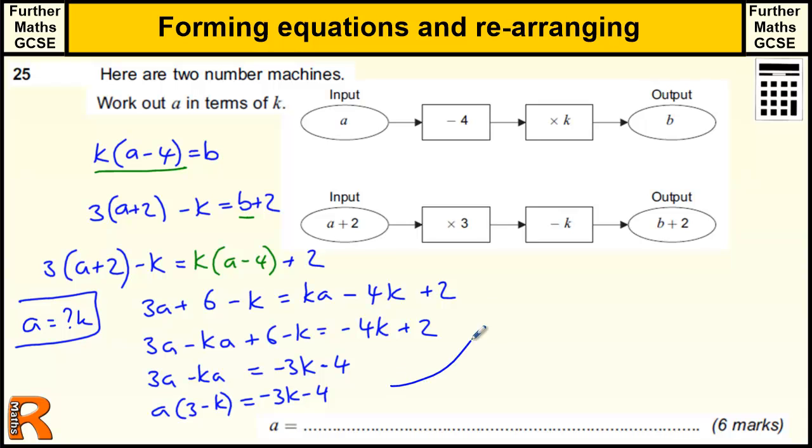Okay, and then that's coming up here - we just divide by the 3 minus k to take it over to the other side.